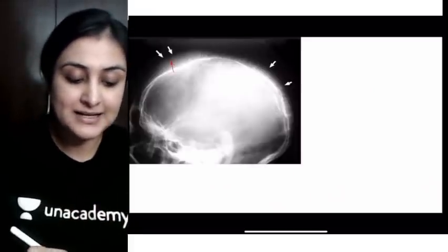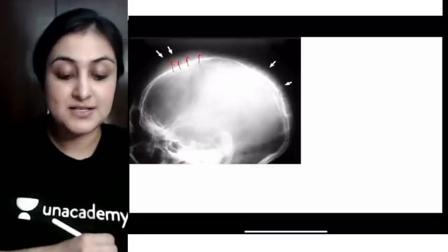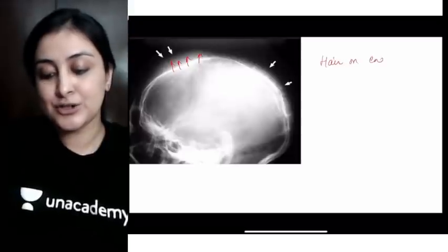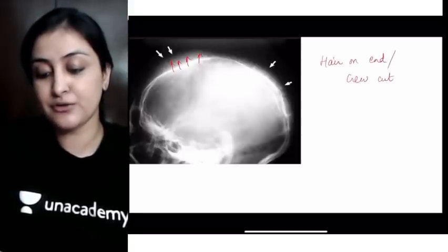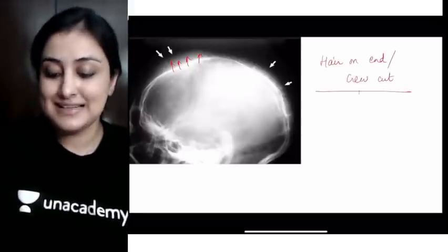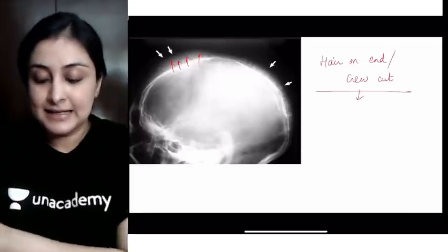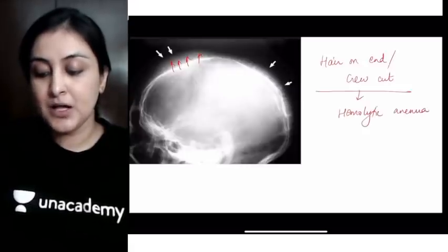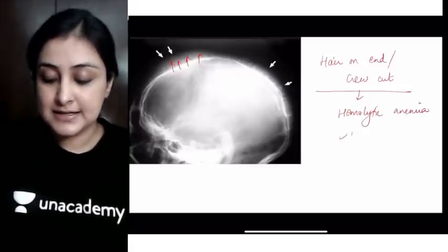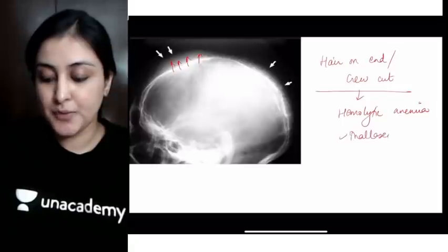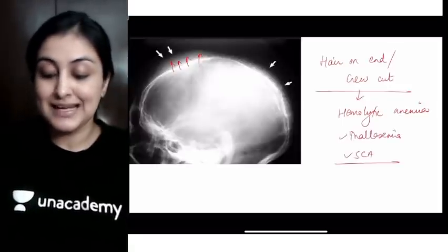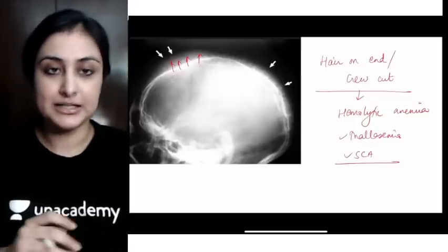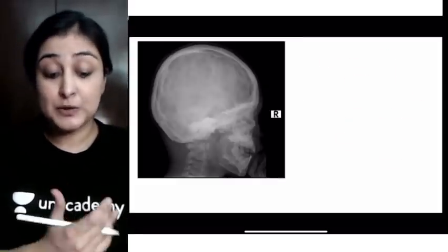When you see that the trabeculae are all raised, giving a very typical 'hair on end' or 'crew cut' appearance, this is a favorite of FMG examiners. This is seen in any hemolytic anemia — it could be thalassemia or sickle cell anemia. Depending on your options, choose accordingly, but it is seen because of extramedullary hematopoiesis in cases of hemolytic anemia.